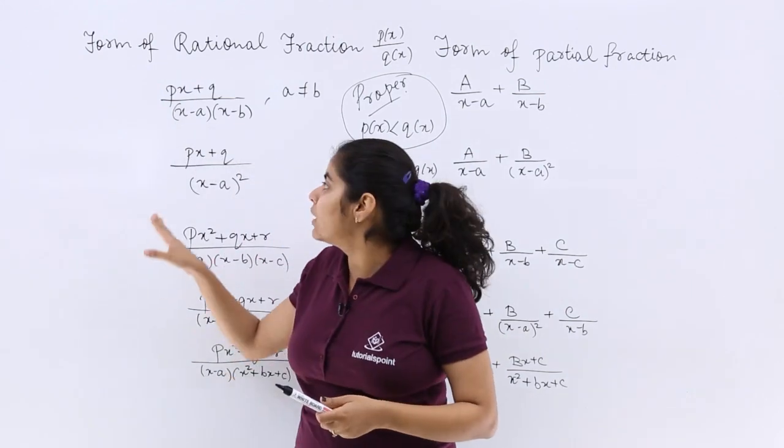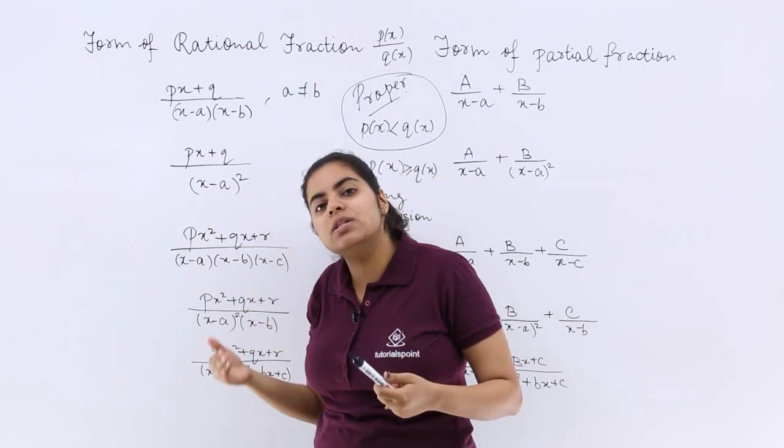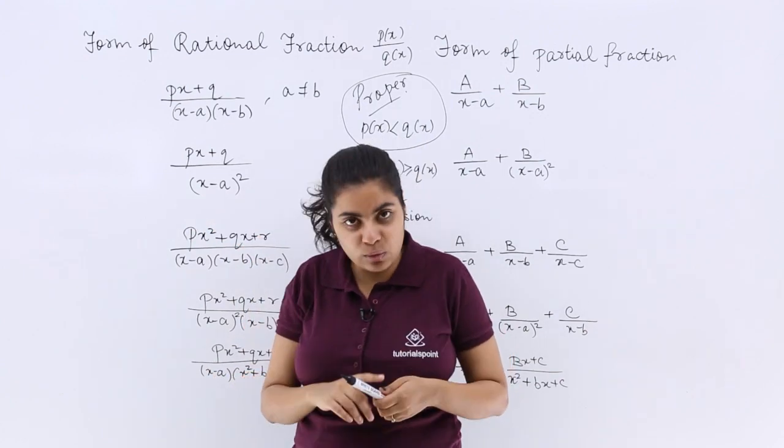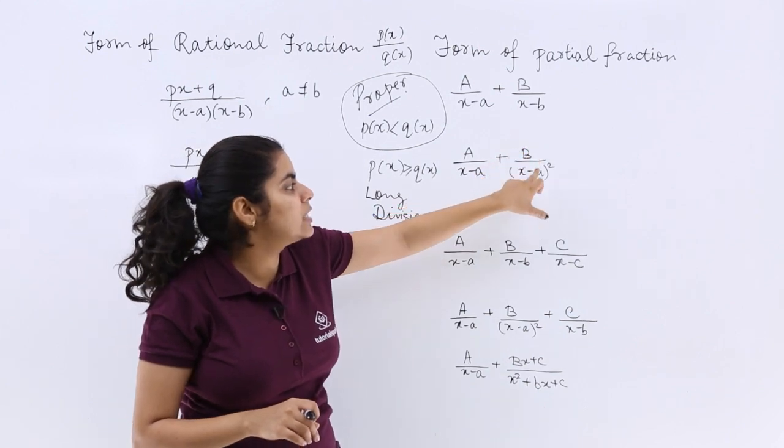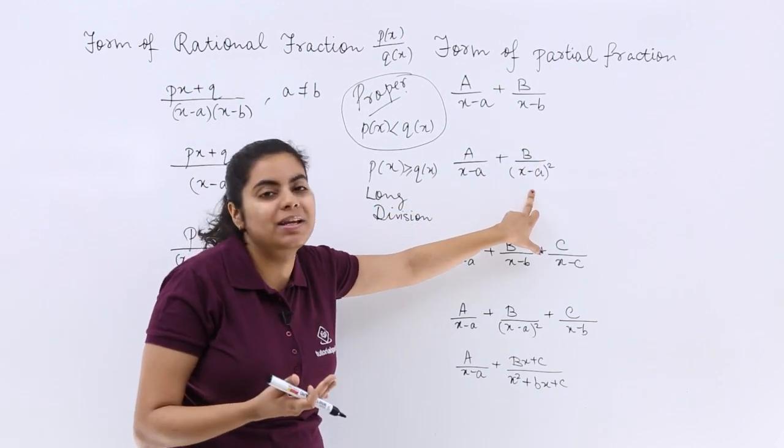Next, if you are given the form (px + q)/(x - a)²—that means the denominator is a whole square—then the form would be a/(x - a) + b/(x - a)² this time.